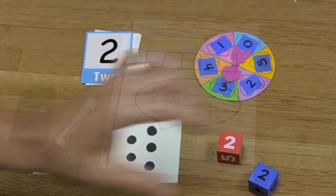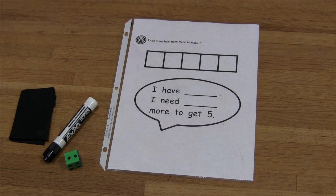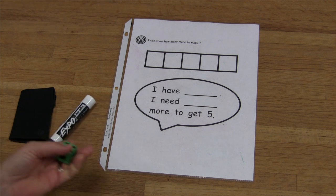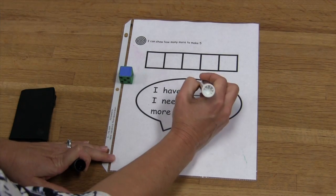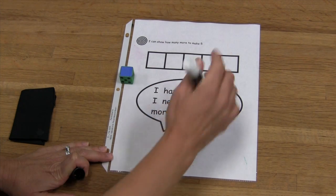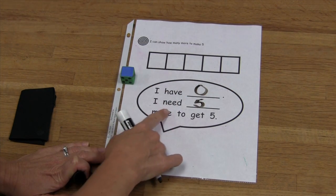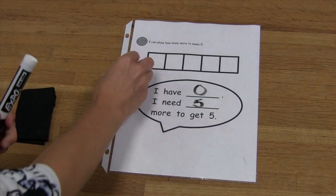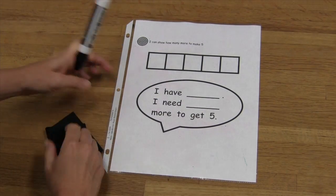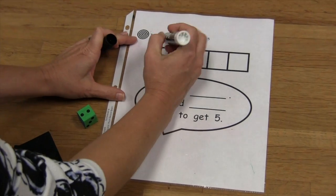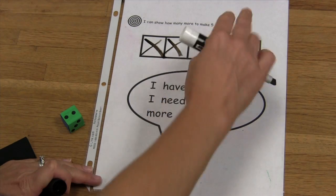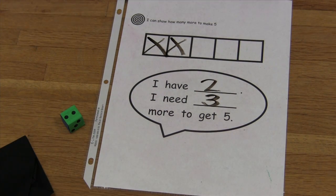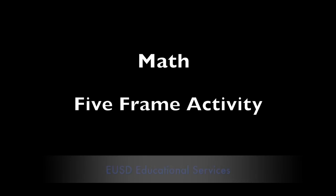After students have done the activity many times with manipulatives, you want to move into the visual-only model, where students will roll the die and draw that many. This happens to be zero, so I wouldn't draw any. I have zero, I need five more to get five. Two: I have two, I need three more to get five. This is another option for playing the five frame activity.